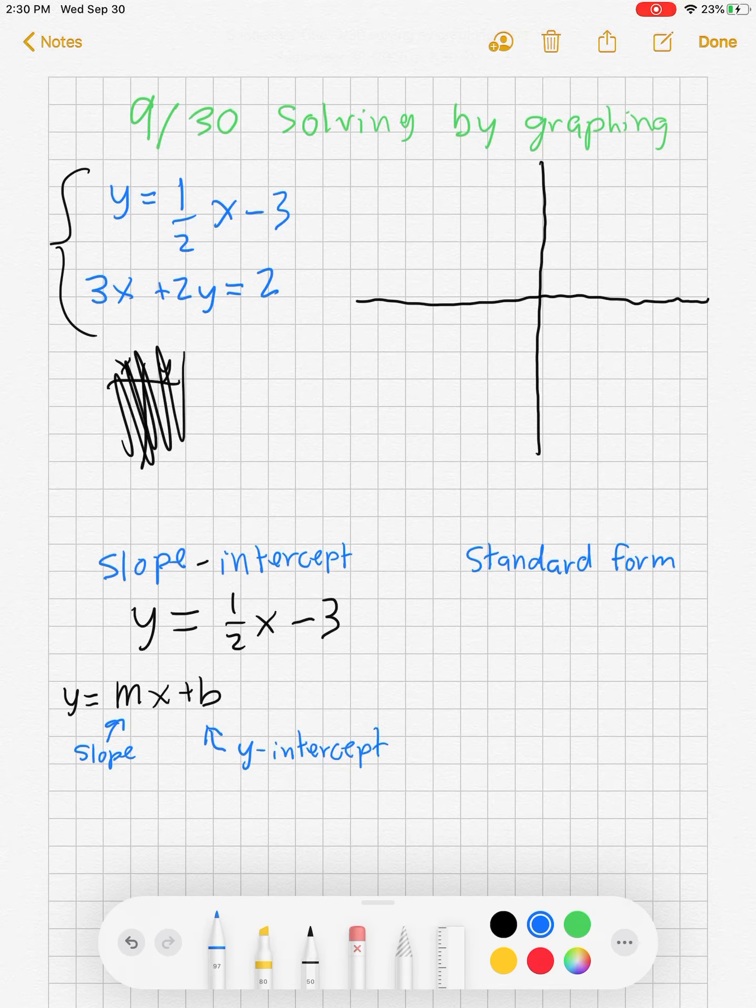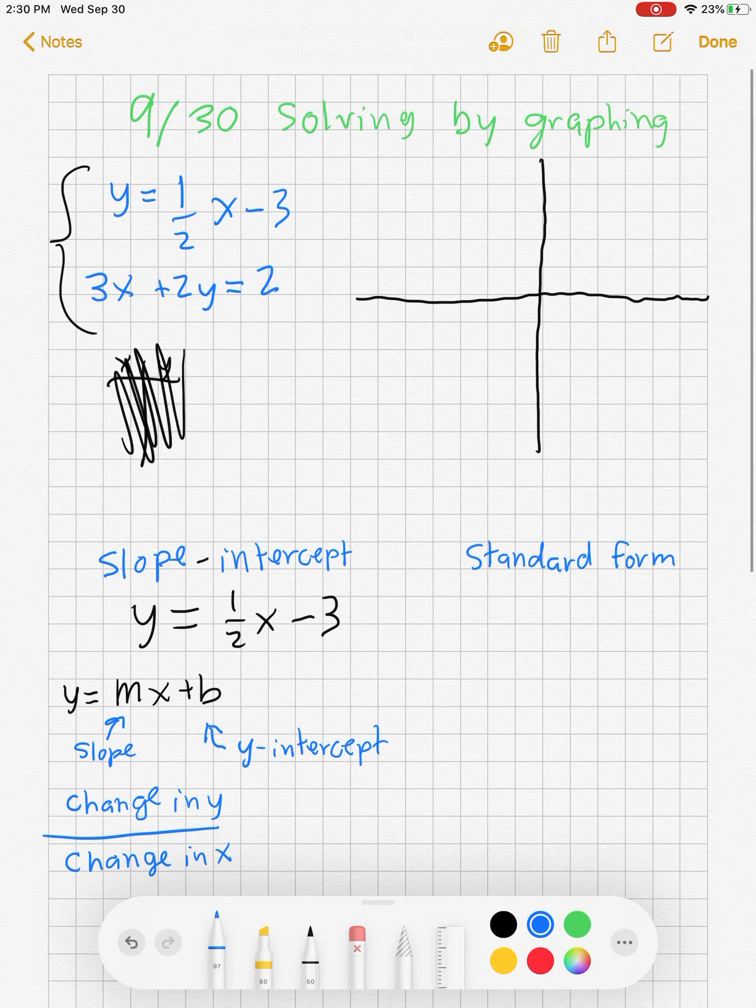Take a second to remember that slope means the change in y over the change in x, meaning how do we change vertically compared to how do we change horizontally. So let's go back to this example. How are we changing vertically? Well, for every one we go up, we go over two.